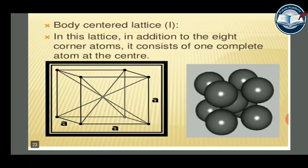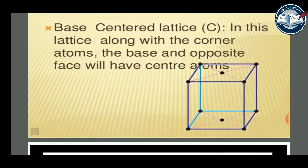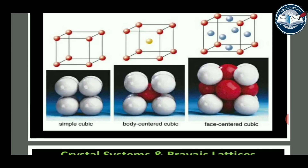The body-centered lattice has eight corner atoms plus one complete atom at the center. In the face-centered lattice, along with the corner atoms, each face has one center atom — giving six face atoms. In the base-centered lattice, along with corner atoms, the base and its opposite face have center atoms. So the four types of unit cells are: simple cubic (8 corner atoms), body-centered cubic (8 corner + 1 center), and face-centered cubic (8 corner + 6 face atoms).